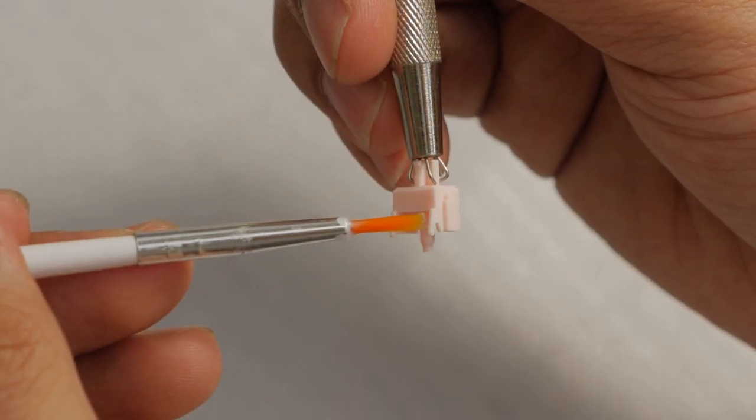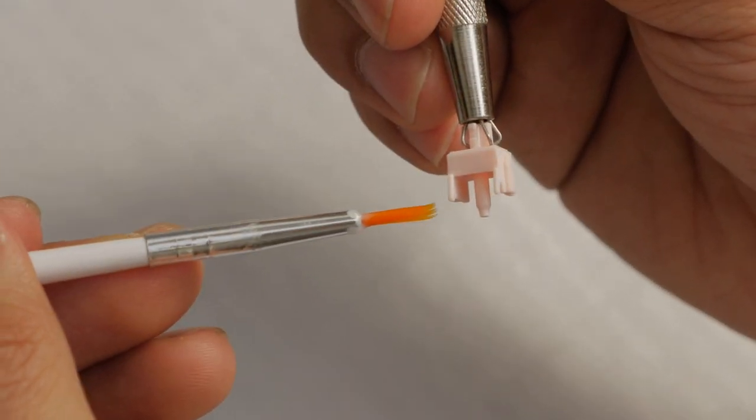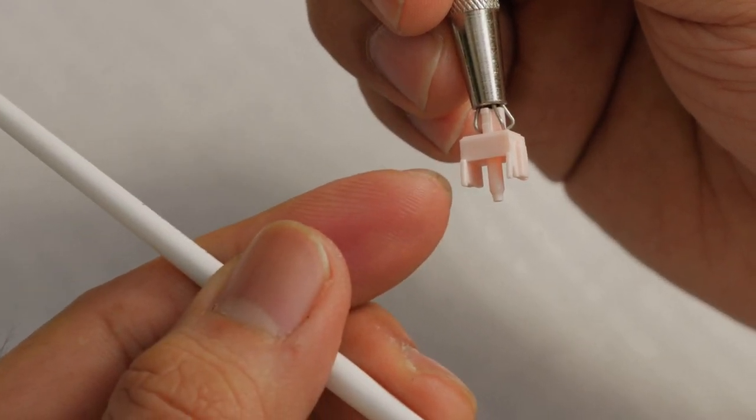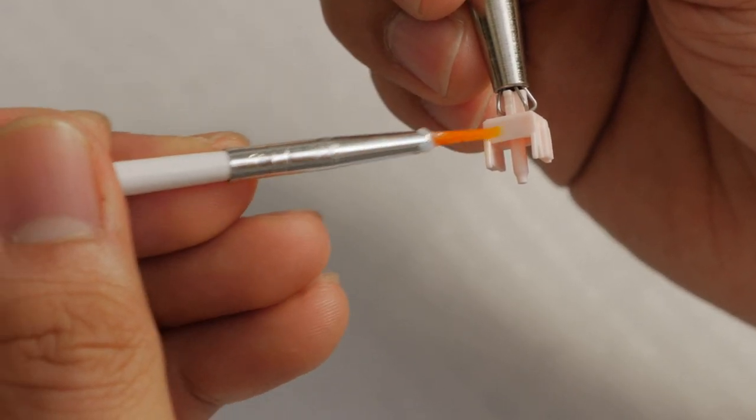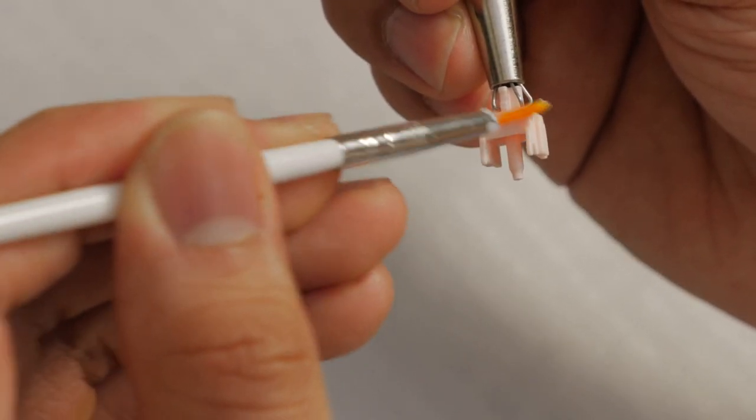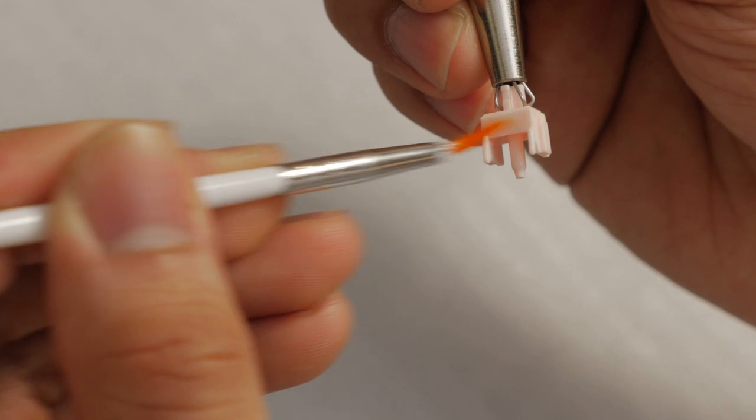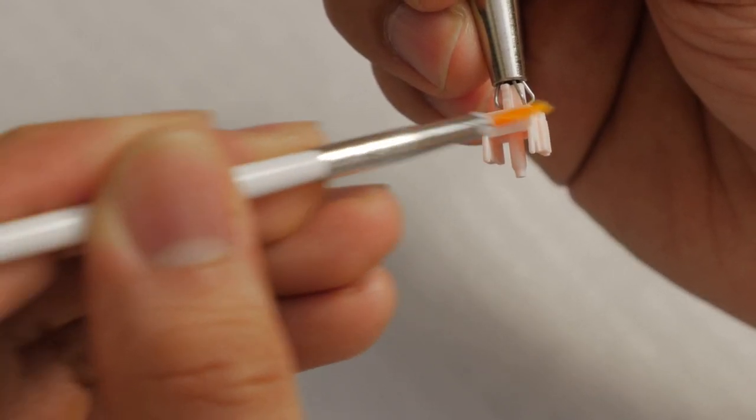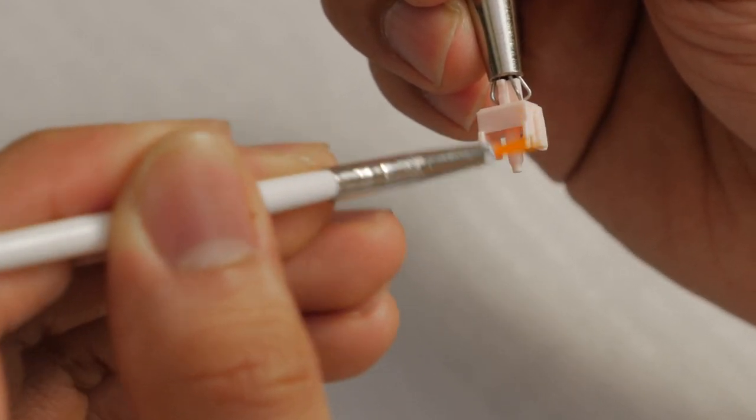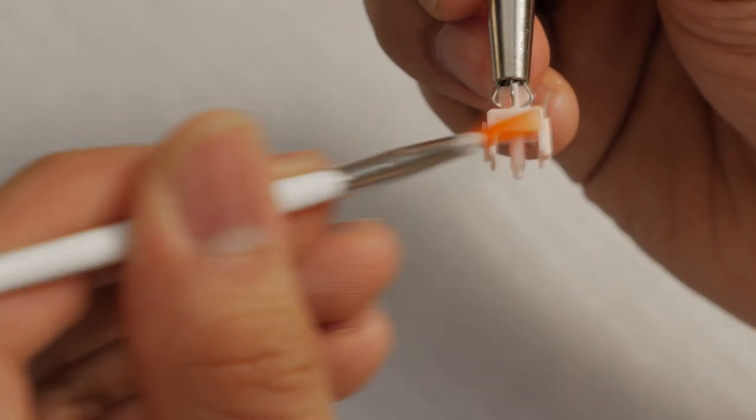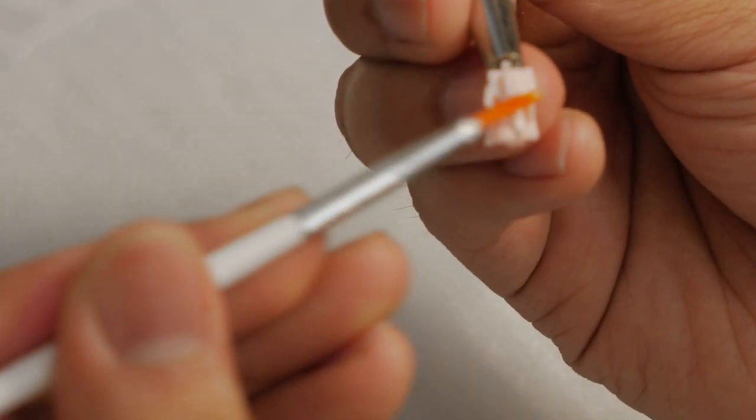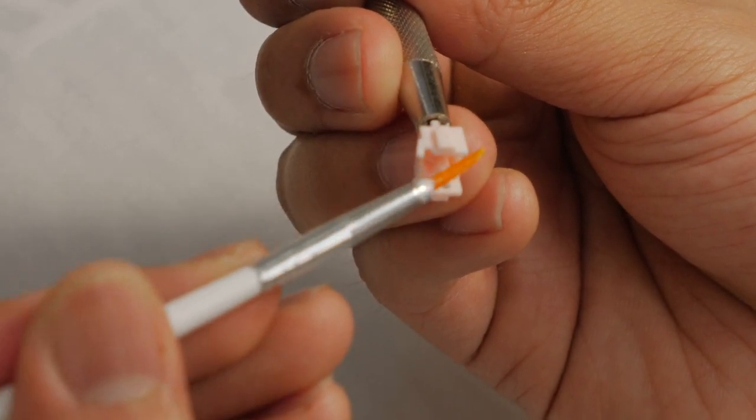This is where you really need to pay attention. If you have a tactile switch, you do not lube these legs. You just want to lube the top. But since this is a linear switch, an alpaca, we'll lube the whole thing. I try to hit the bottom as well.